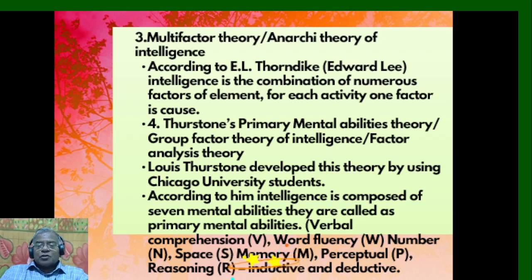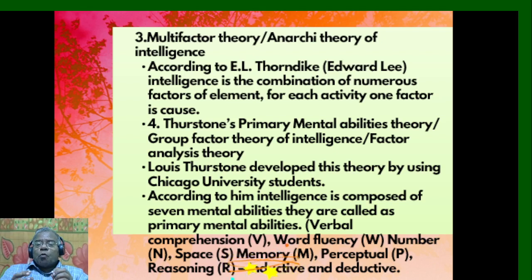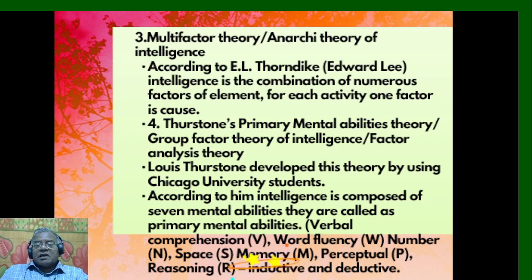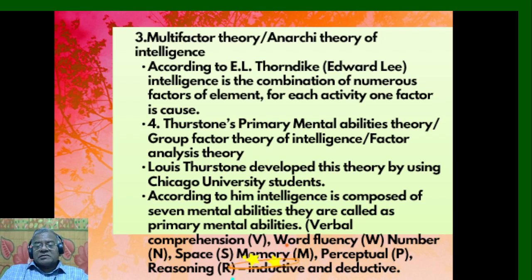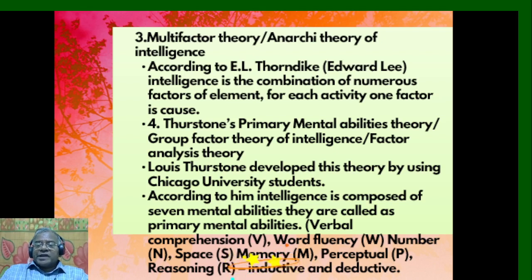The Multi-Factor Theory was proposed by E. L. Thorndike. According to him, intelligence is the combination of numerous factors or elements, and for each activity one factor becomes the cause. Thurston's Primary Mental Abilities Theory, also called the Group Factor Theory or Factor Analysis Theory, was developed by Lewis Thurston using Chicago University students. According to him, intelligence is composed of seven primary mental abilities: verbal comprehension, word fluency, number, space, memory, perception, and reasoning.